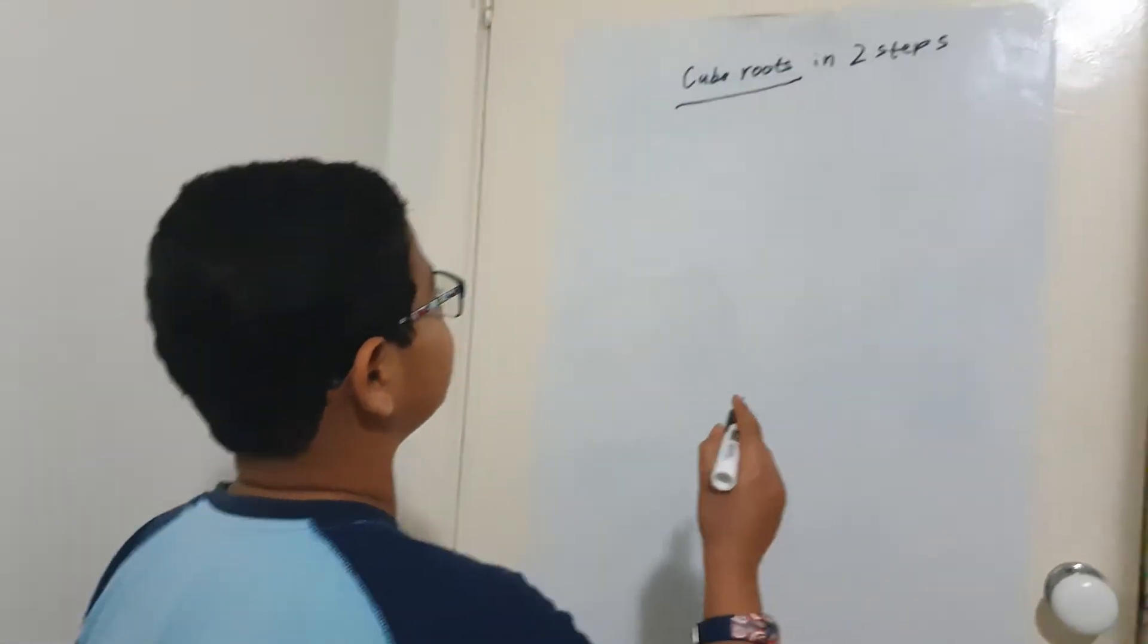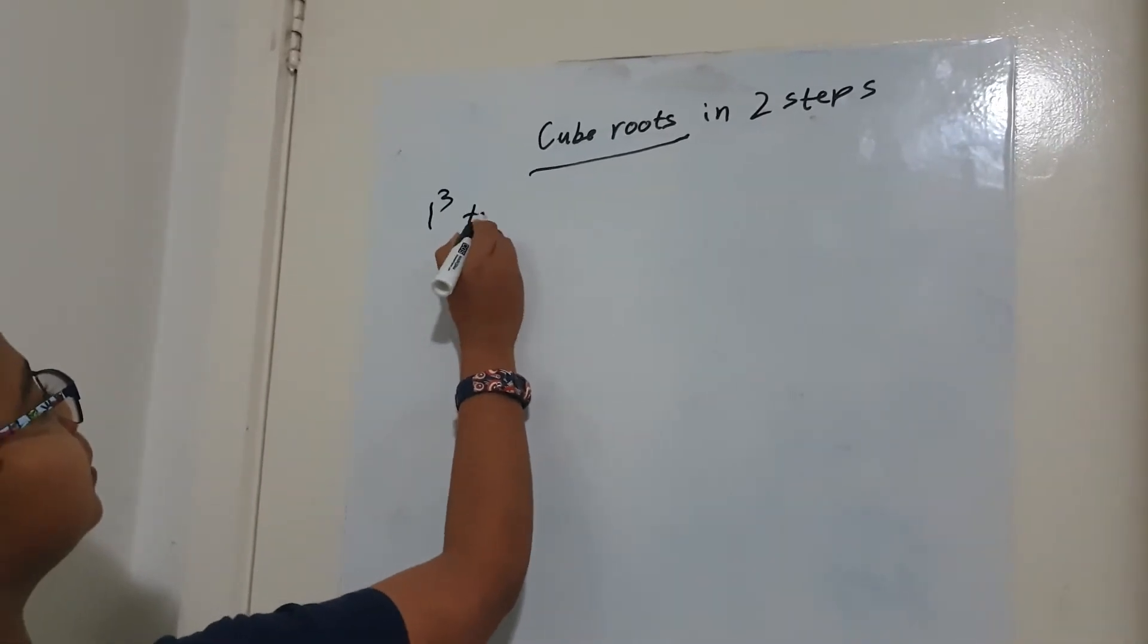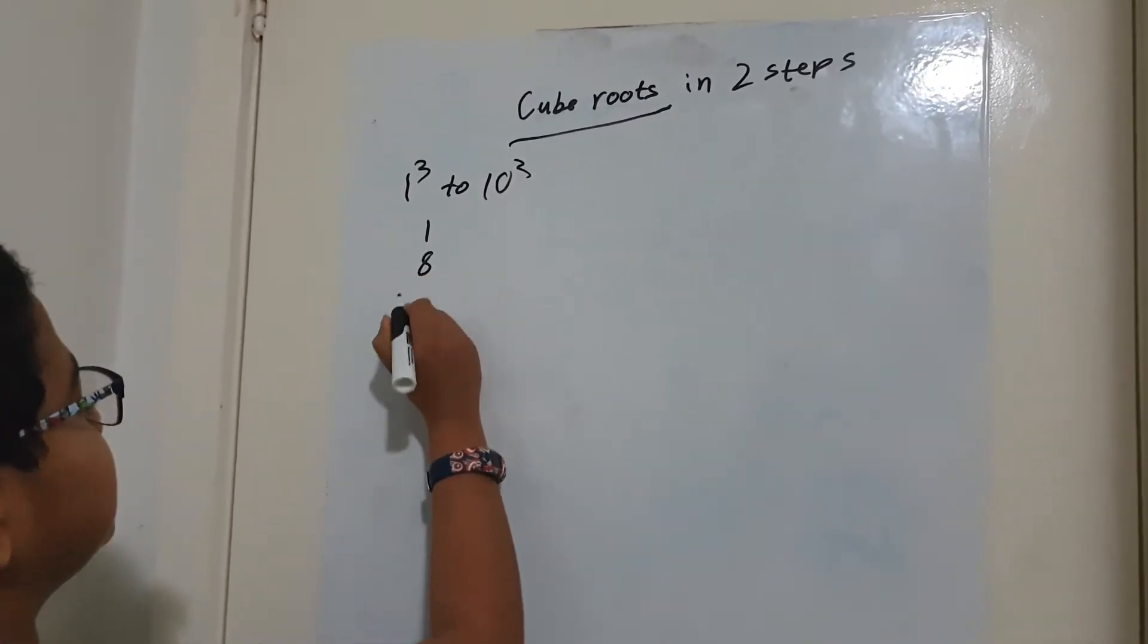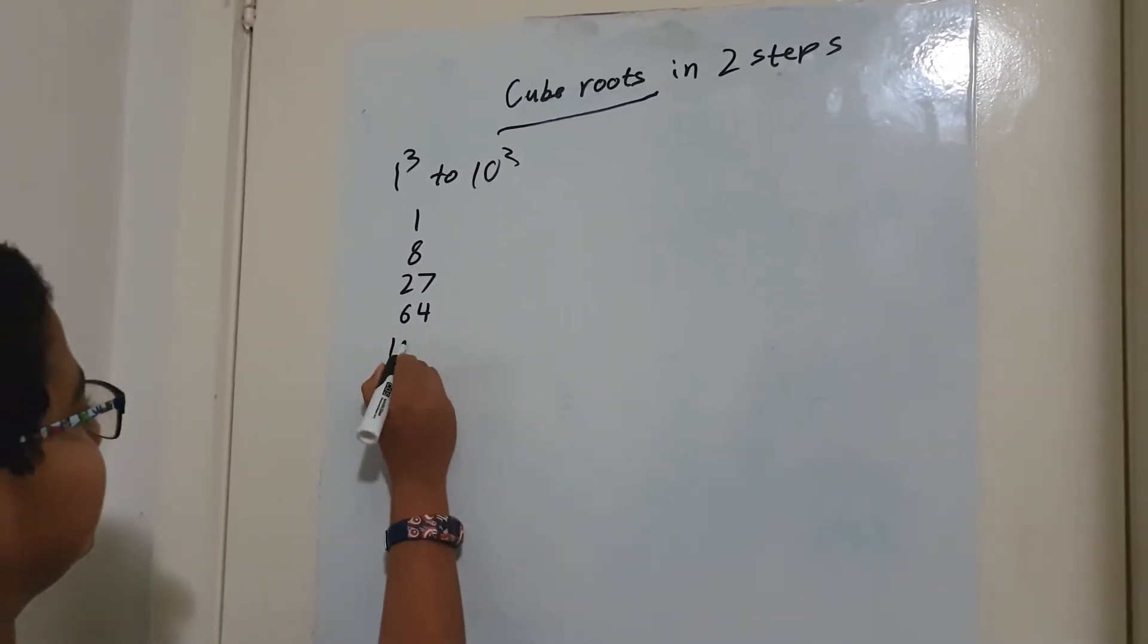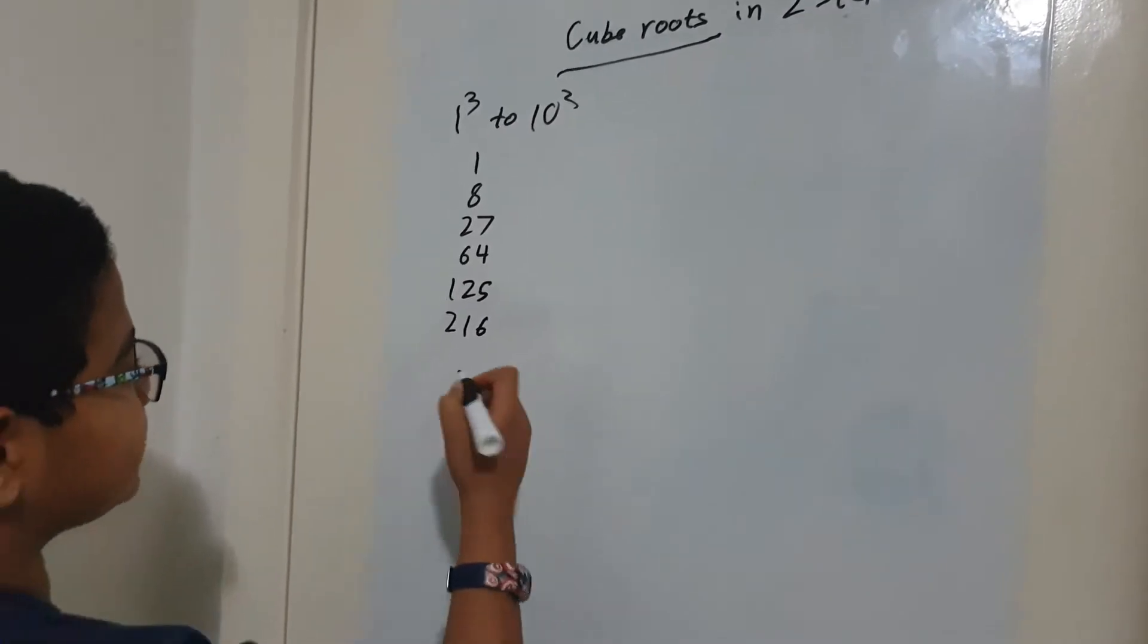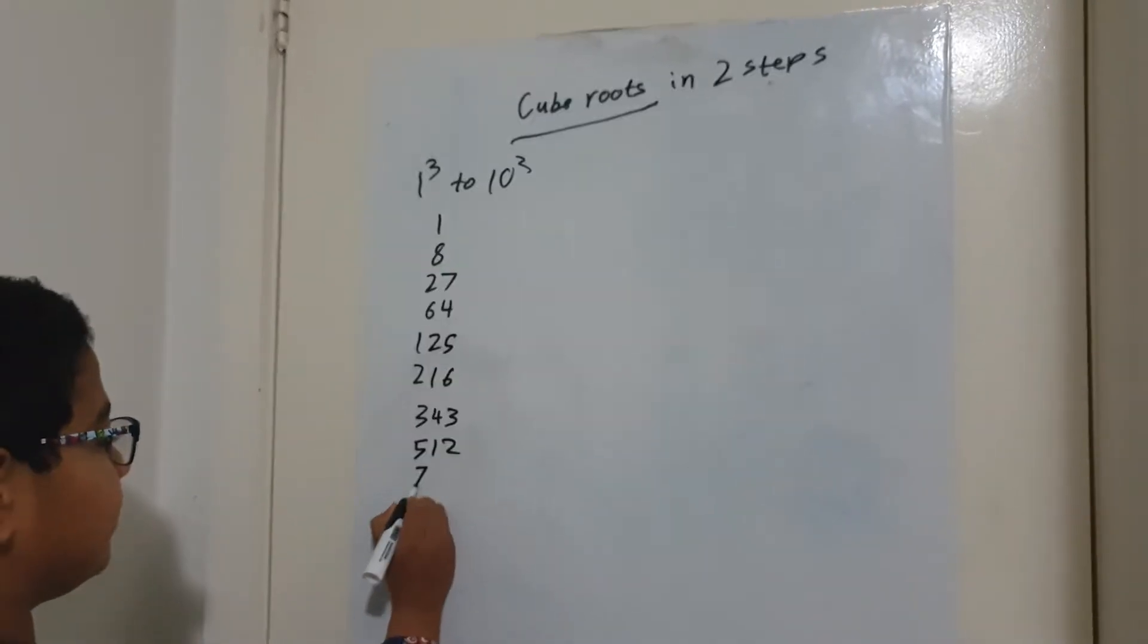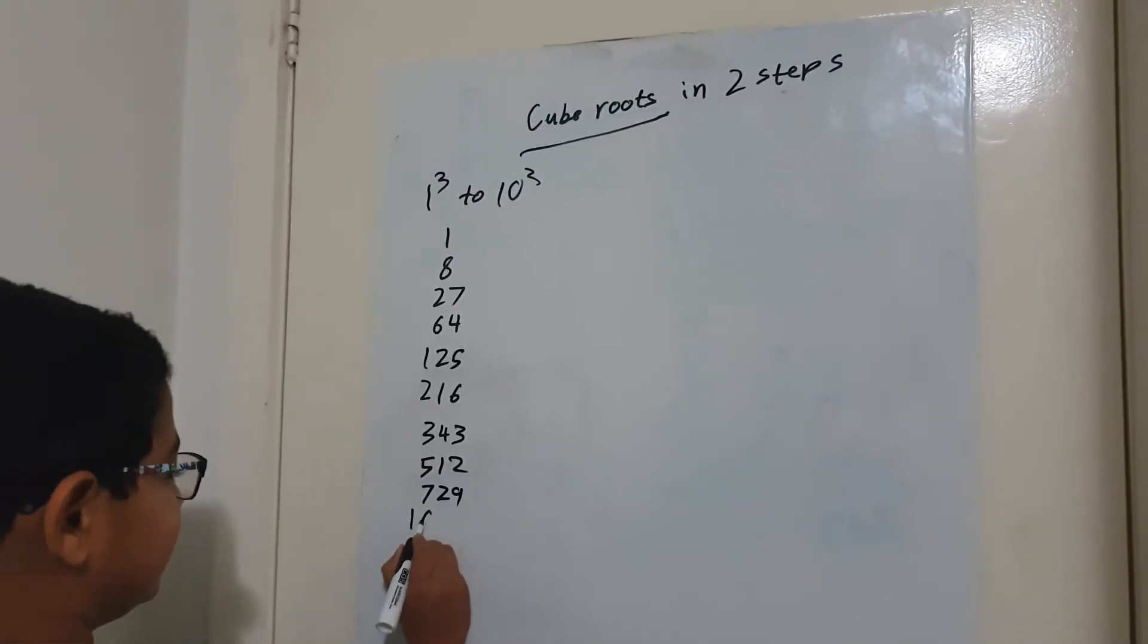But first, you need to know the cubes from one cube to ten cube. So if you don't know them, I'm just going to write them down in order. So it's 1, 2³ is 8, 3³ is 27, 4³ is 64, 5³ is 125, 6³ is 216, 7³ is 343, 8³ is 512, 9³ is 729, and 10³ obviously is 1000.